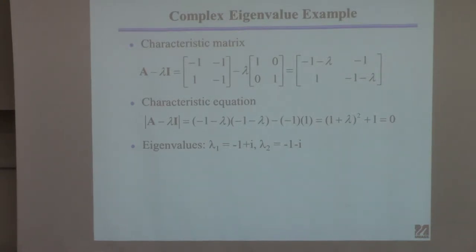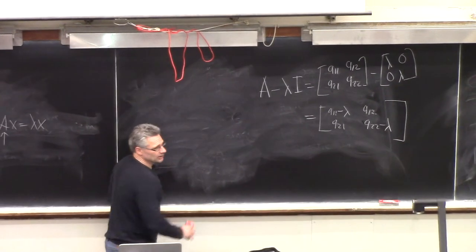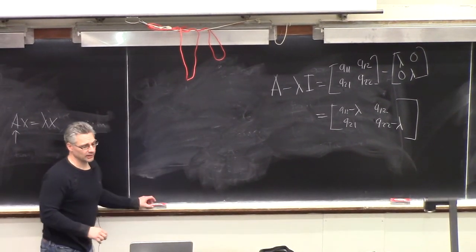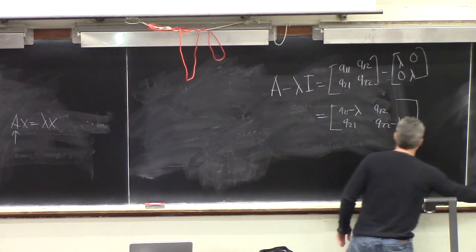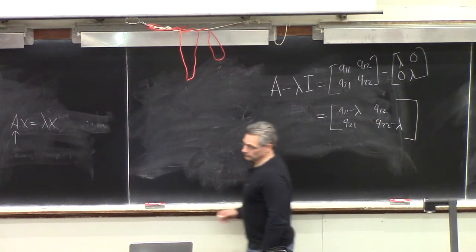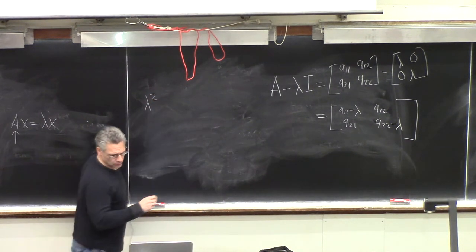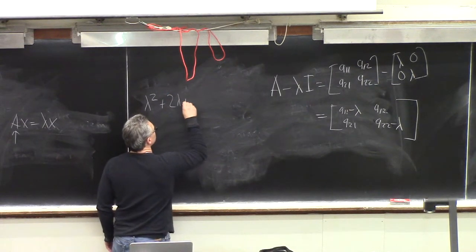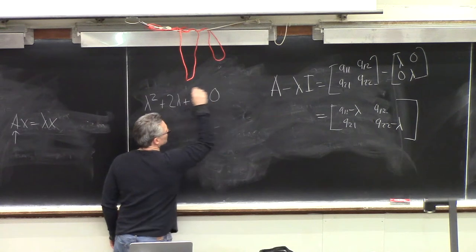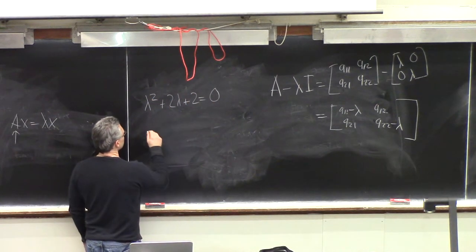So now you've got this particular polynomial. To find the roots, you'd use the quadratic formula. The polynomial is lambda squared plus 2 lambda plus 2. If you want to find the roots, plug it into the quadratic equation.